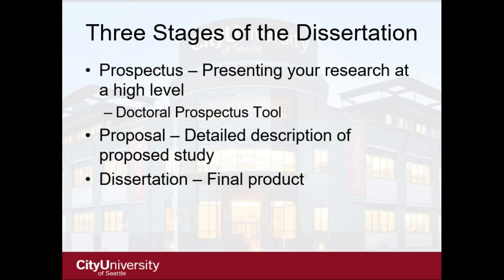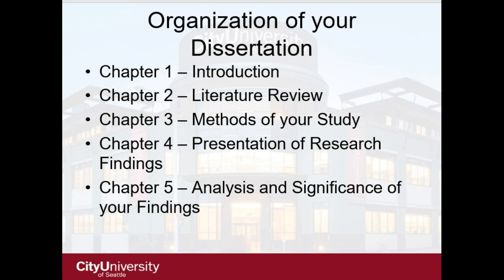There are three stages of the dissertation process at CityU. The first is the prospectus, which is basically an outline of what you're going to do. The reason we do the prospectus is to ensure alignment between your problem statement, the research in the field, your research questions or hypotheses, and your methodology. The proposal is a more detailed description of your study — chapters 1, 2, and 3 written out fully. Then the dissertation is the final product, organized in five chapters.